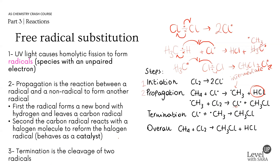The termination step — the third one — is when two radicals react together and stop reacting because they form a new bond, with those two electrons coming together to give the desired product. All steps — initiation, propagation, termination — are continuously occurring because radicals are extremely reactive.